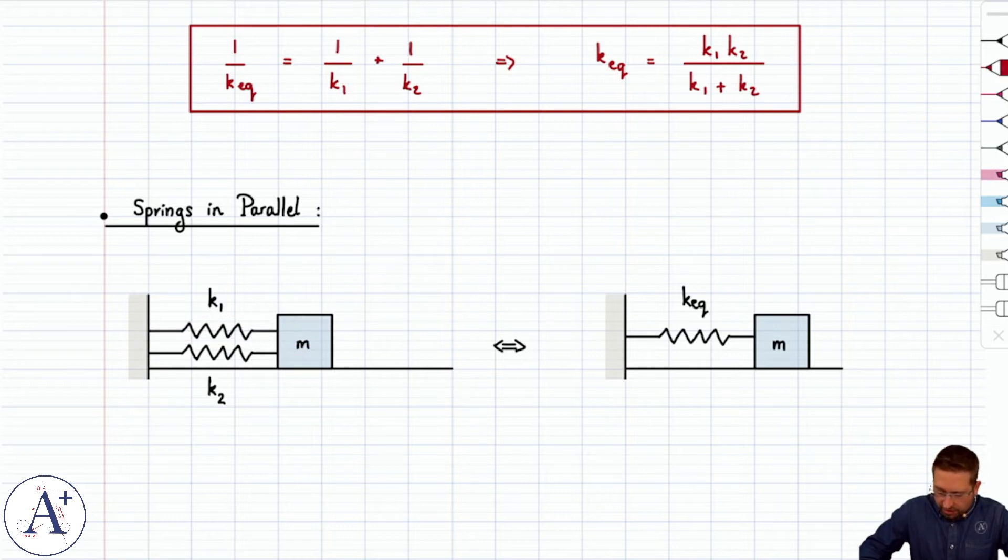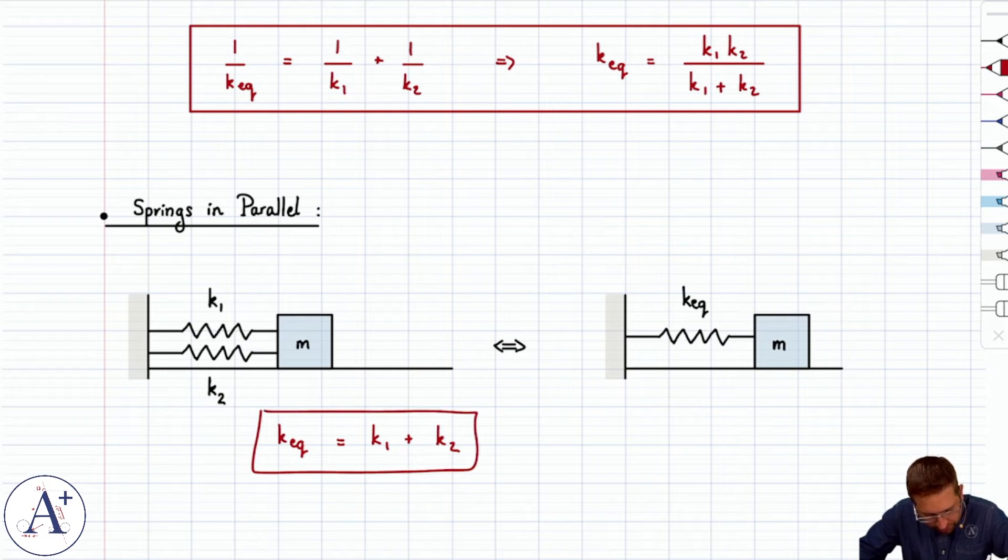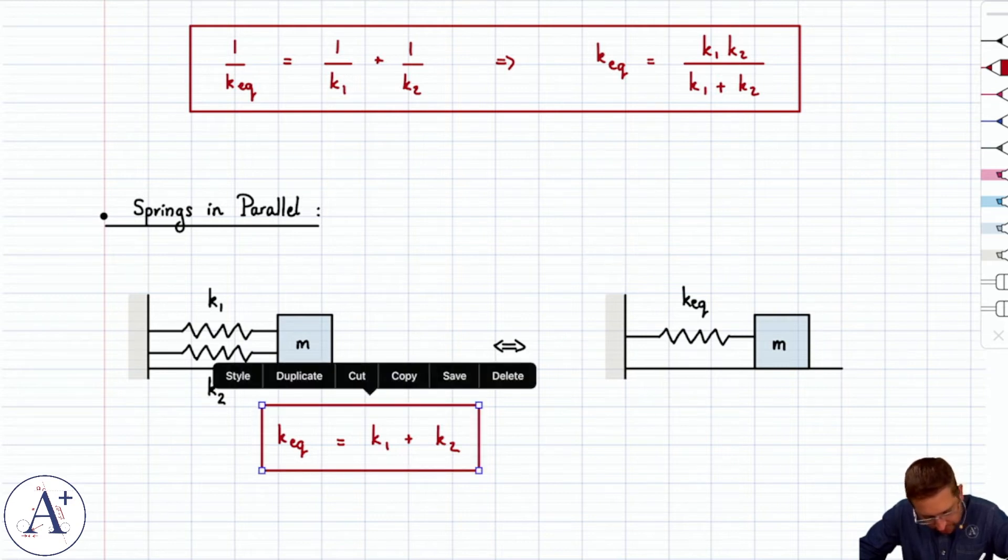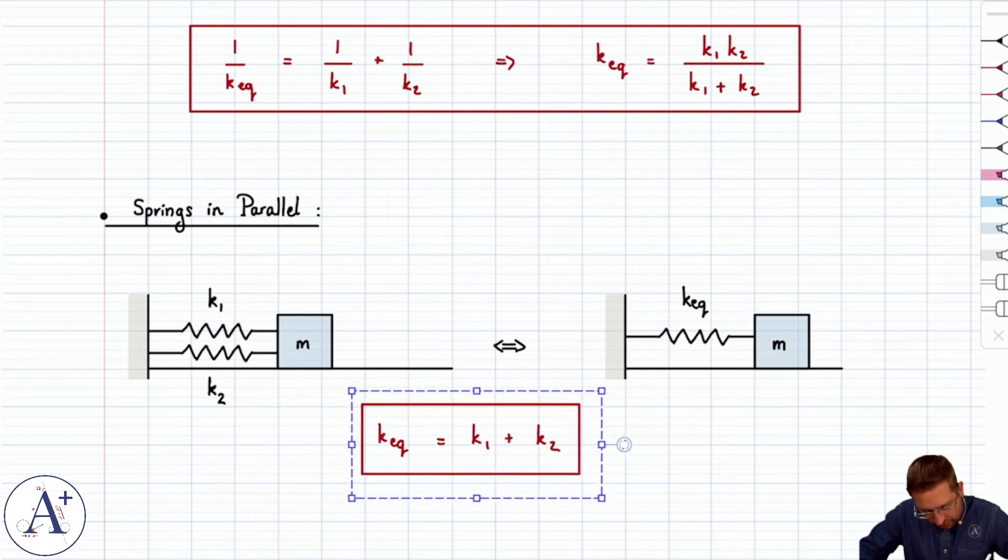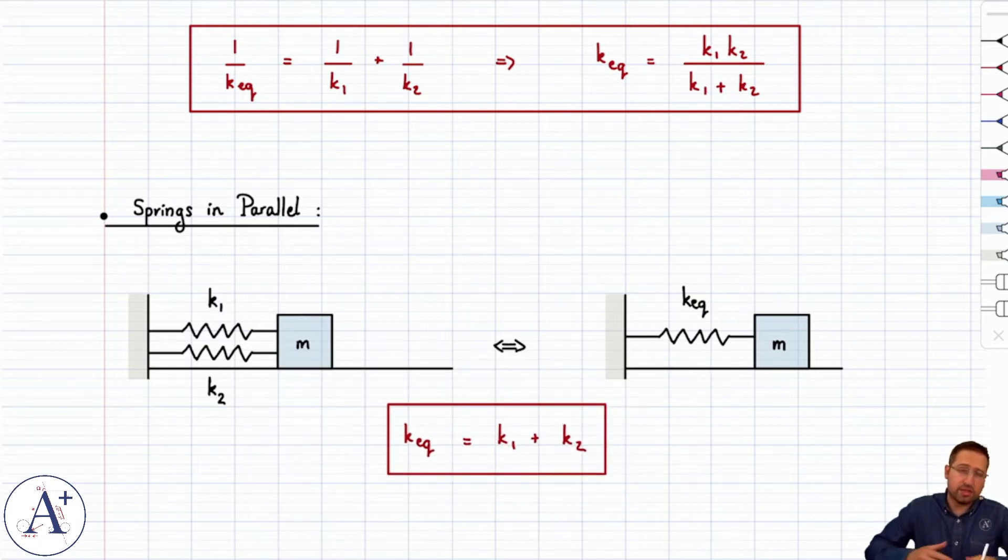Now, it turns out that even though it's a little bit harder to recognize springs in parallel sometimes, it's a lot easier to get k equivalent because k equivalent is simply the sum k1 plus k2. And if you had multiple springs, three or four, you would just add all the spring constants together to get k equivalent under the condition, of course, that all the springs actually be in parallel.